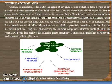We will start with the chemical contaminant. The chemical contaminant of foodstuff can happen at any stage of their production, from growing raw materials to the consumption of finished product. The chemical contaminant includes compounds that are present in raw material and go straight to the consumer. The effect of chemical contamination on the consumer can be a longer one.